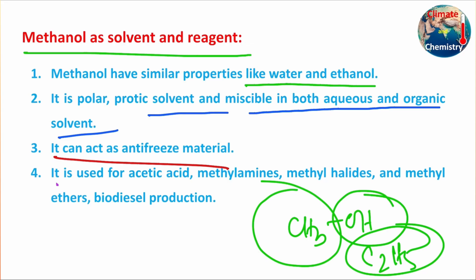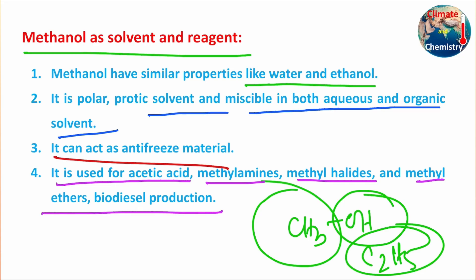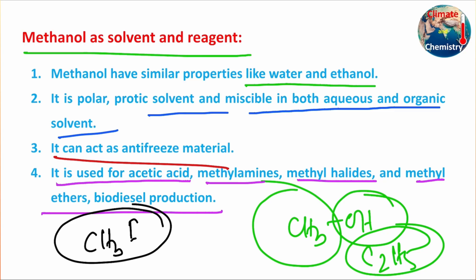Additionally, methanol can be used for the preparation of acetic acid, methyl amine, methyl halide, methyl ether, and biodiesel production. Methyl iodide is a liquid compound, which is why it is used in SN2-type substitution reactions, making it a very famous methylating agent.